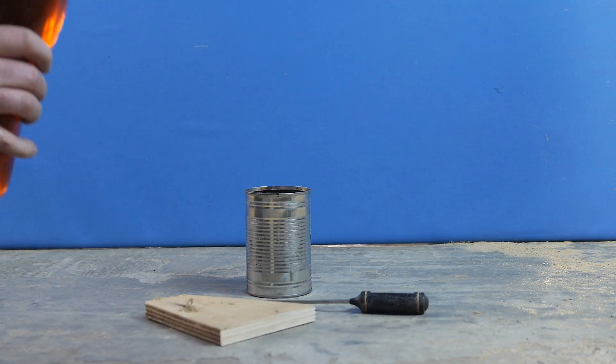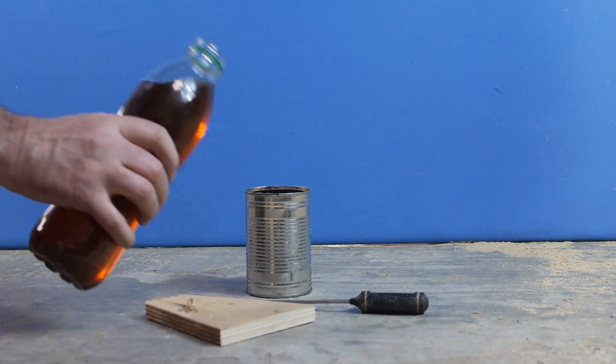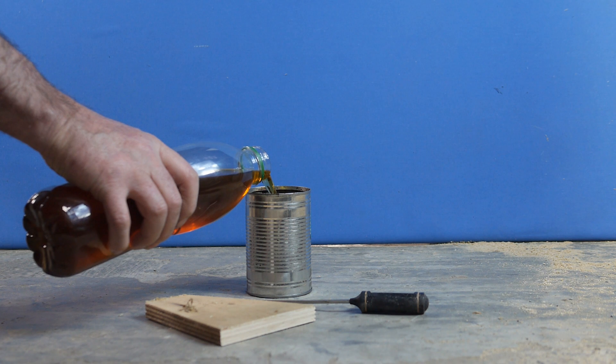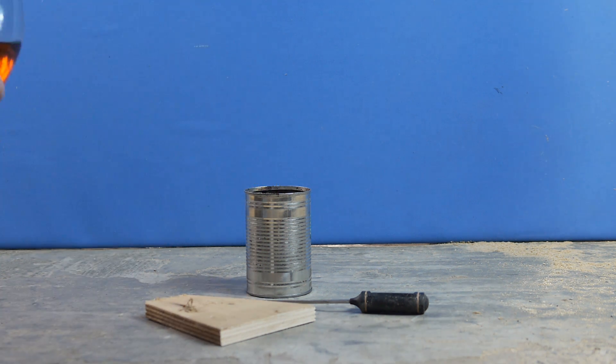Half fill the can with the fuel sample. Once you've finished that, put the cap back on and move the sample well away from the test site.